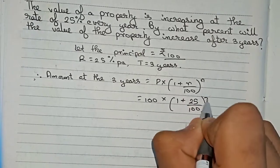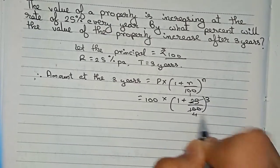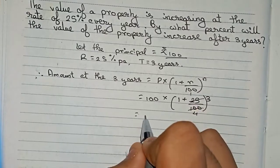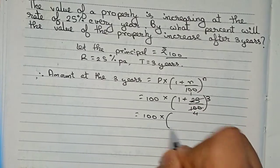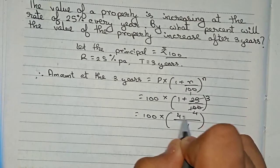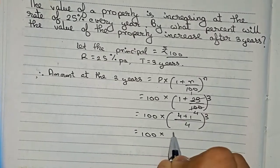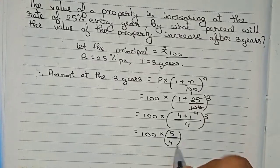25 and 100 can be simplified to 1/4. Taking 4 as the LCM: (4+1)/4 = 5/4. So it becomes 100 × (5/4)^3.